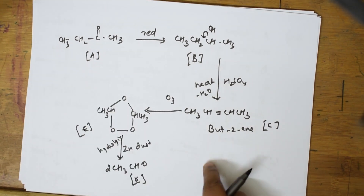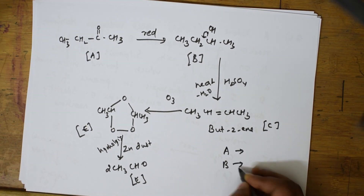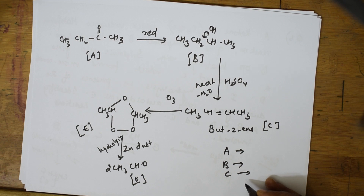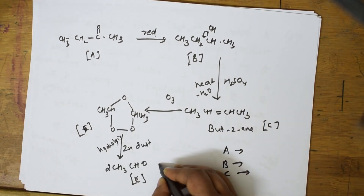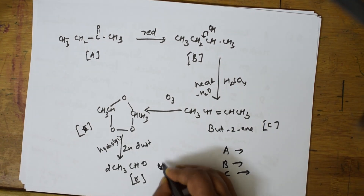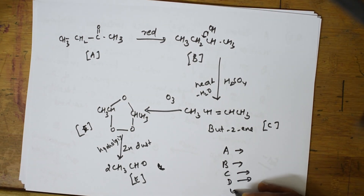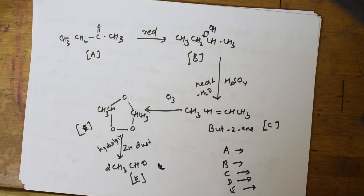So to summarize: compound A is methyl ethyl ketone (C₄H₈O), compound B is butan-2-ol, compound C is but-2-ene, compound D is the mono-ozonide, and compound E is acetaldehyde (CH₃CHO). This is how you analyze paragraph-based organic chemistry questions. I'll meet you again with the next question — question number 7.